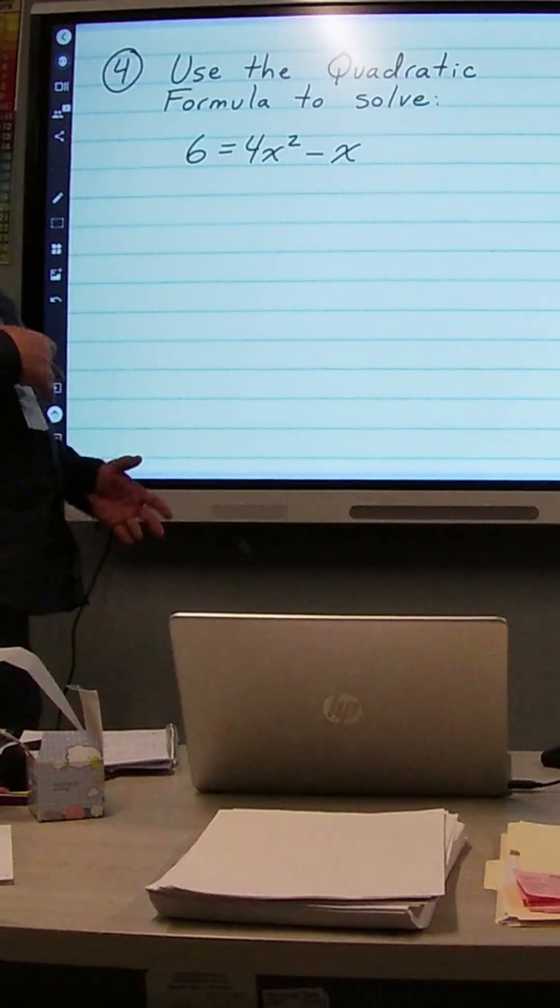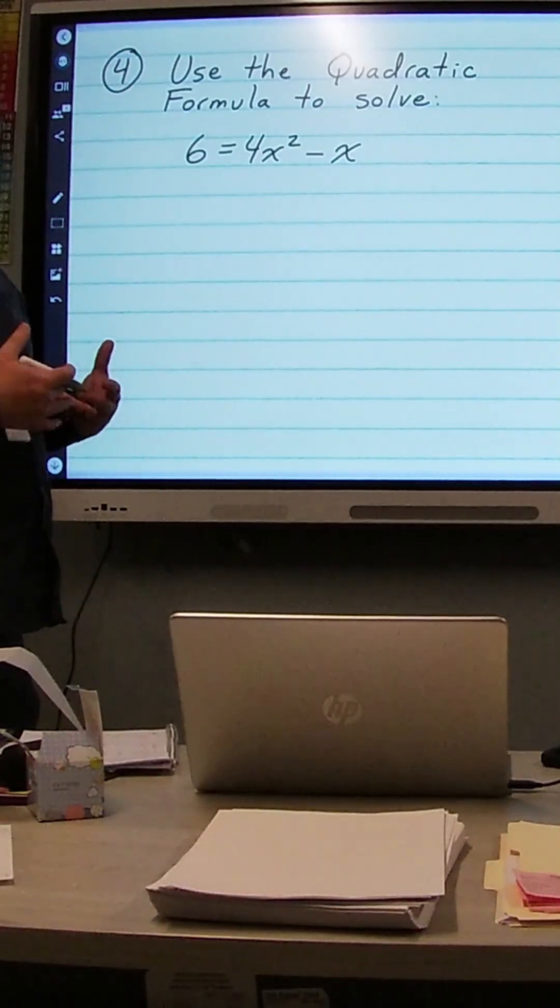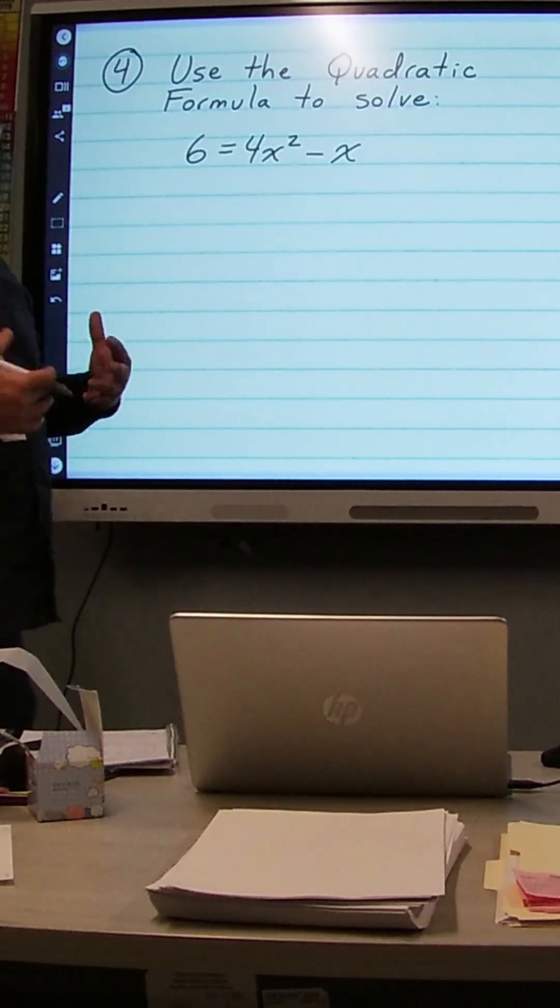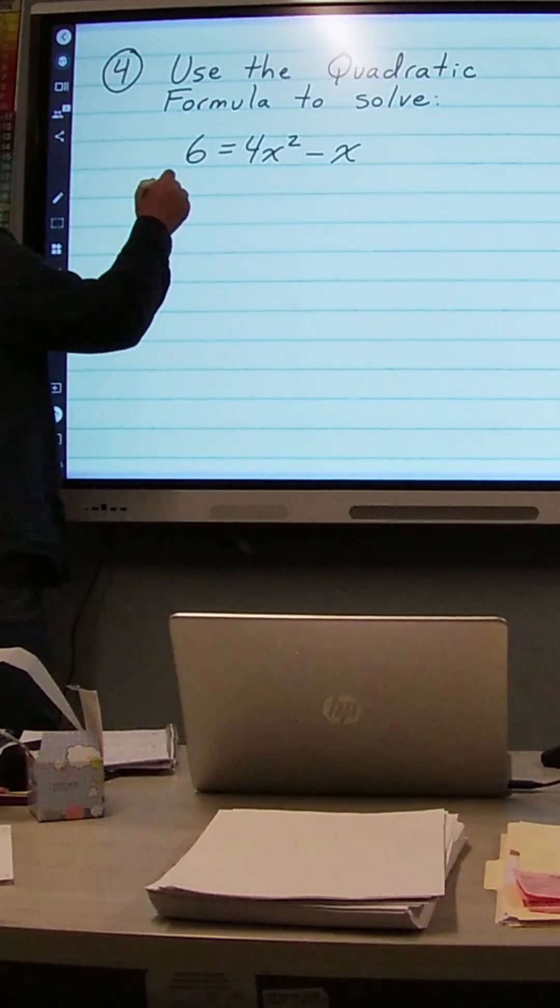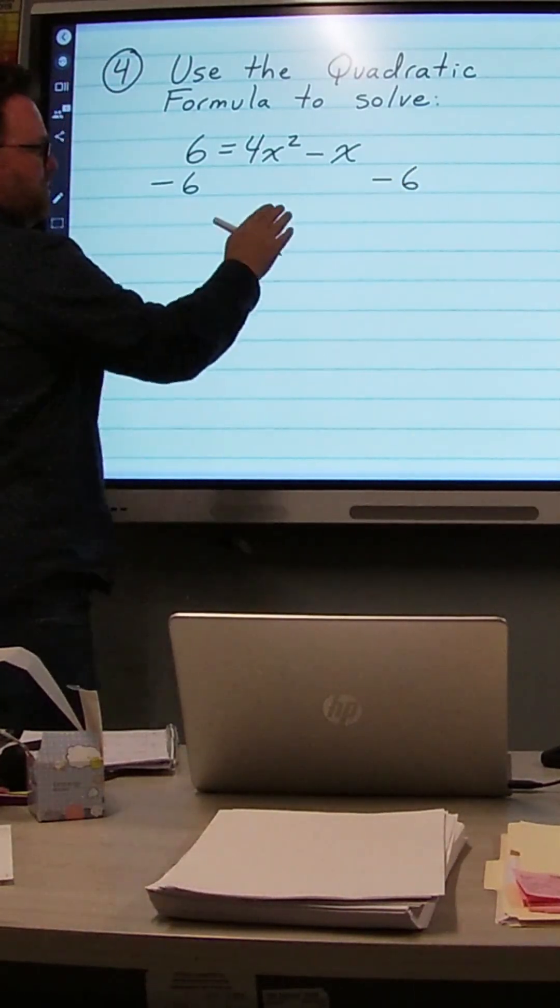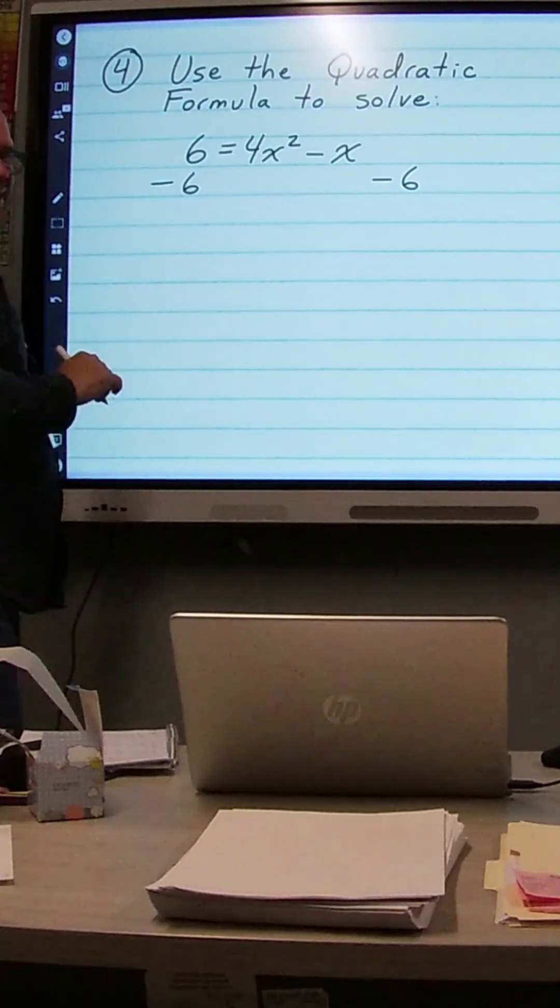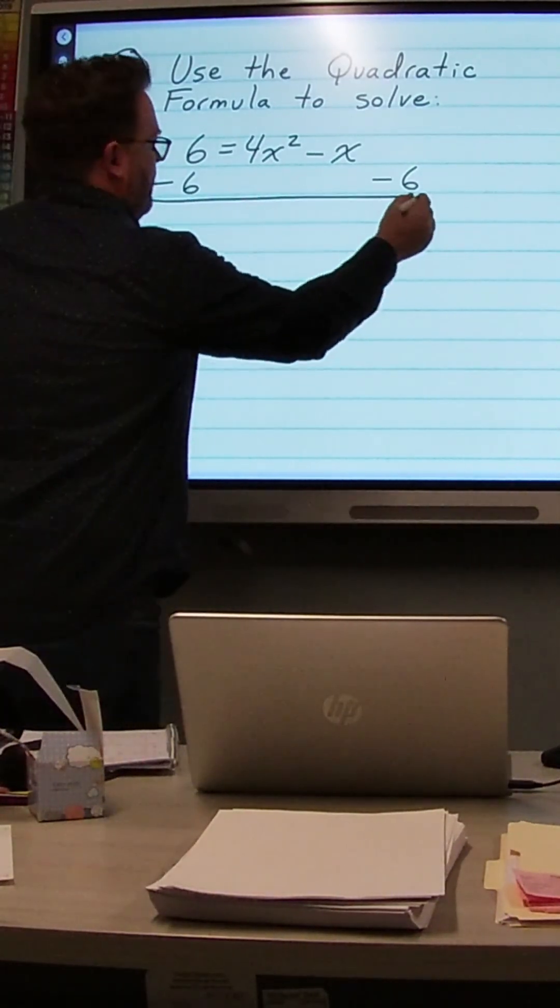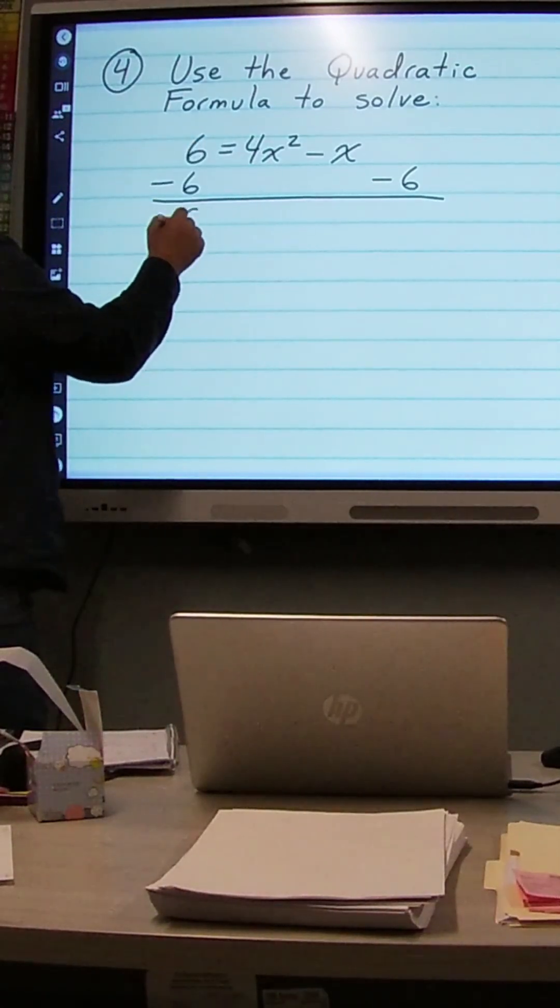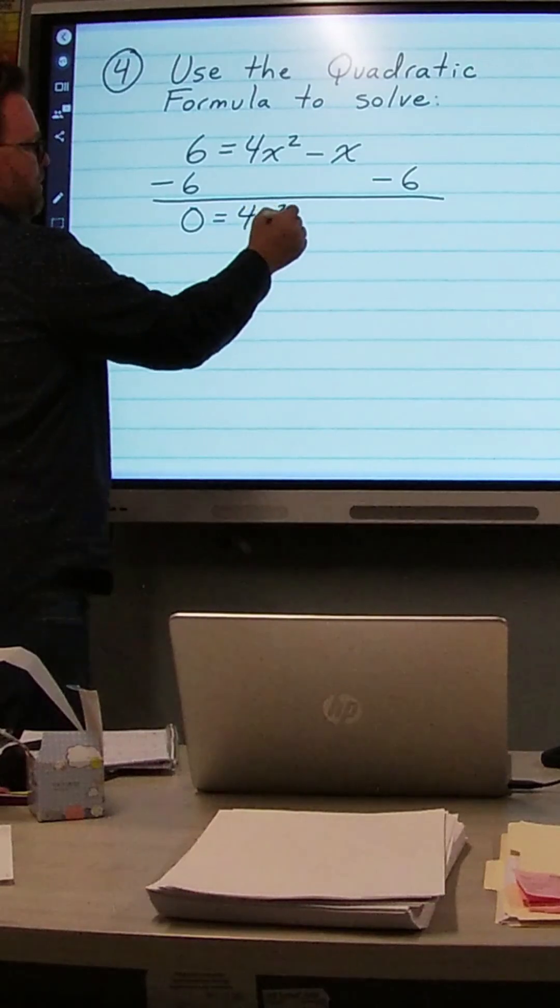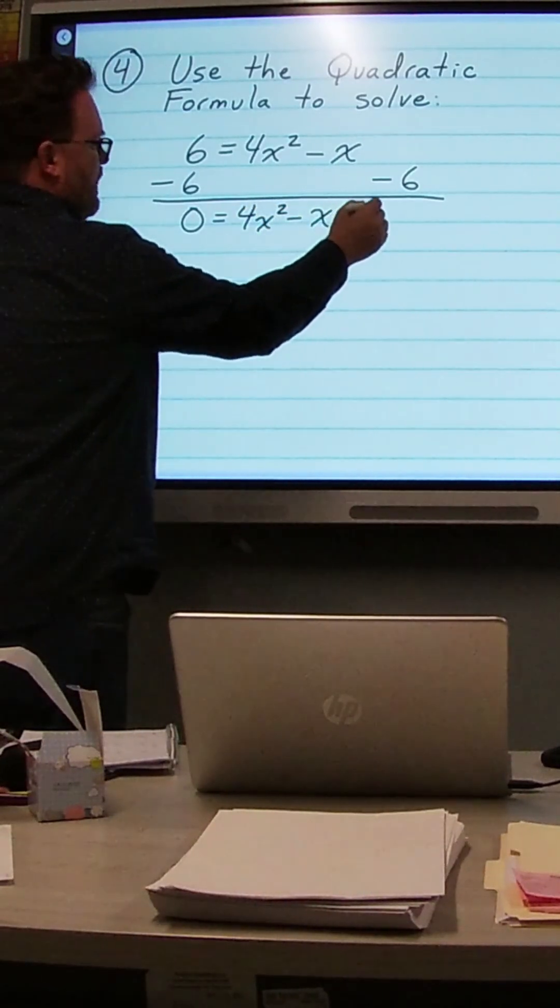Now with this one, when we use the quadratic equation, we want one side to equal 0. So I probably want to move this 6 over. That would be the easiest way to do it. So I'm going to subtract 6 from both sides. I'm moving the 6 over here because 6 is not like 4x squared or x. It's not a like term, so we can't combine those. So 6 minus 6 here is 0. We want that. That's going to equal 4x squared minus x minus 6.